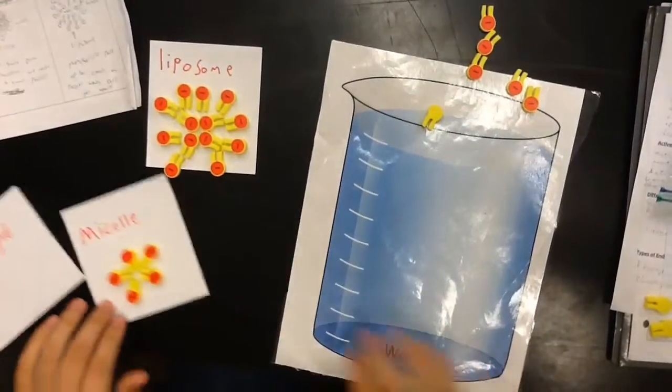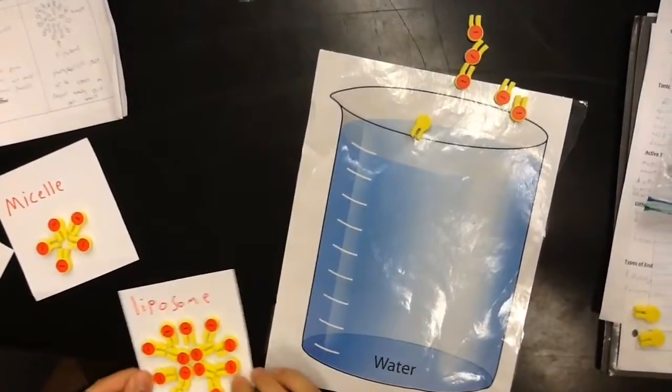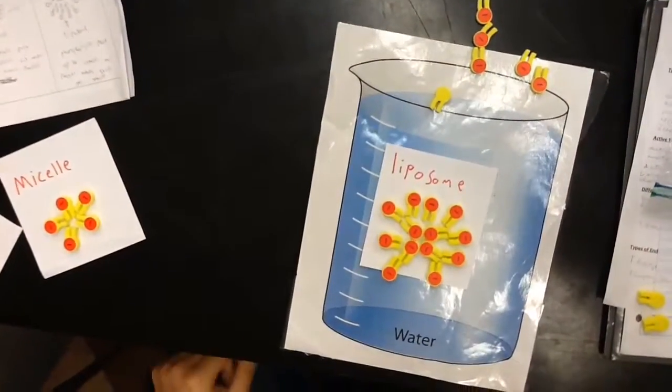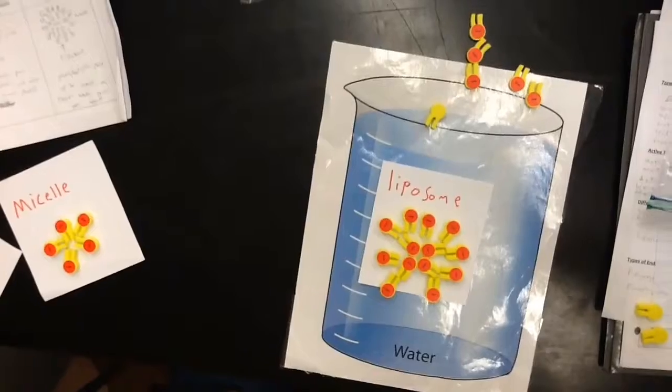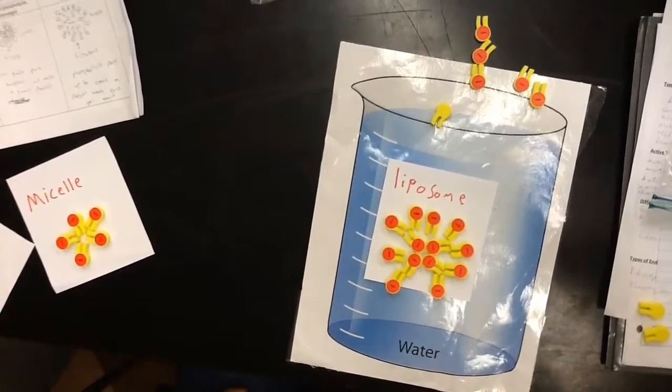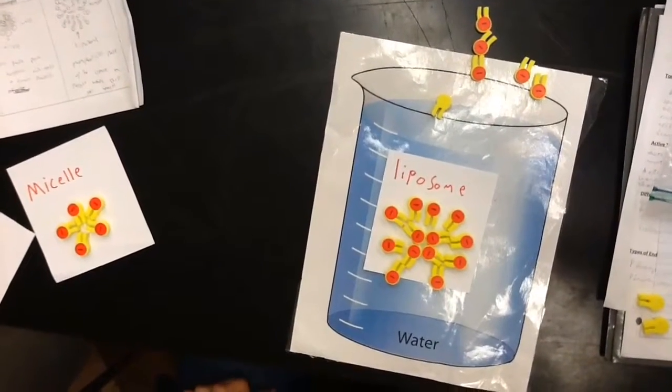When a bigger amount of phospholipids are present, they make a liposome where the inner circle of phospholipids are connected by their heads, with the tails sticking out. Then, the outer circle is connected to the tails of the inner circle.